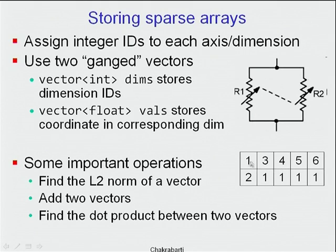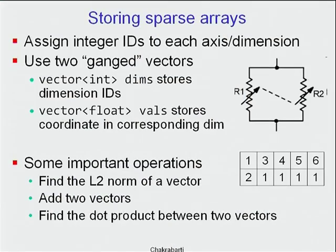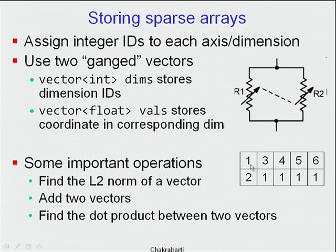These are gang vectors, similar to gang variable resistors in a stereo set where turning the volume knob changes both channels simultaneously. Our sparse array always pairs a dimension ID with its value — they are inseparable. If you shuffle one row without the other, the entire meaning falls apart. Whenever you index through one of these arrays, you must access the same index on the other array.